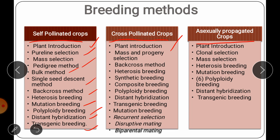For cross-pollinated crops, the breeding approaches include plant introduction, mass and progeny selection, back cross method, heterosis, synthetic, composite, polyploidy breeding, distant hybridization, transgenic breeding, mutation breeding, recurrent selection, disruptive mating, and biparental mating. For asexually propagated plants, the methods used are plant introduction, clonal selection, mass selection, heterosis breeding, mutation breeding, polyploidy breeding, distant hybridization, and transgenic breeding — with mass selection being rarely used in asexually propagated species.